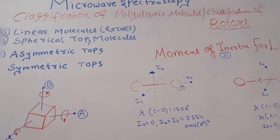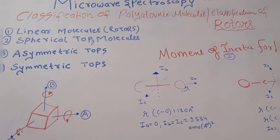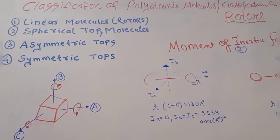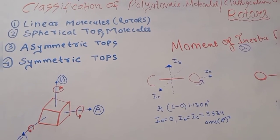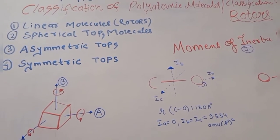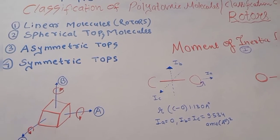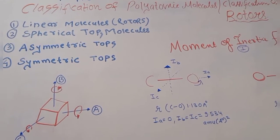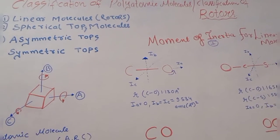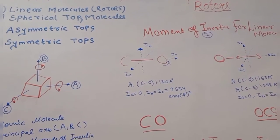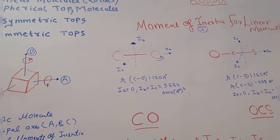Polyatomic molecules are classified into four main categories: linear molecules (linear rotors), spherical top molecules, asymmetric tops, and symmetric top molecules. We classify these molecules on the basis of their moment of inertia.